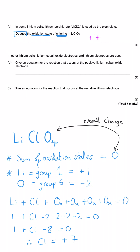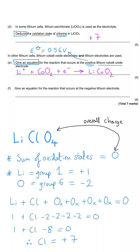Part E asks for the equation at the positive lithium cobalt oxide electrode. This is one to remember. The half equation involves lithium and cobalt oxide; one electron is gained, and we always write this in the forwards direction. The product is lithium cobalt oxide, LiCoO₂, as one combined substance. Alternatively you could write the products as Li⁺ and CoO₂⁻ to acknowledge the ionic nature — either form is acceptable.